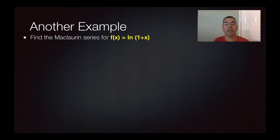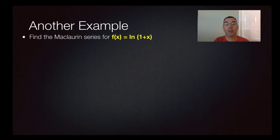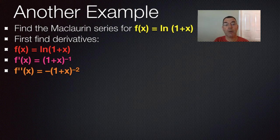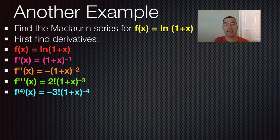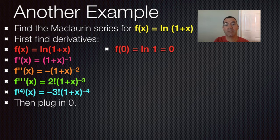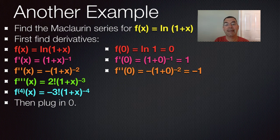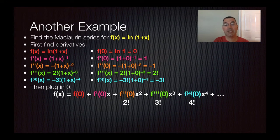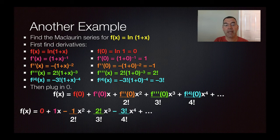Let's do another example — this time approximating the natural log of one plus x. First we'll find some derivatives. The first derivative is (1+x) to the negative one. The next derivative is negative (1+x) to the negative two. Then positive 2 factorial times (1+x) to the negative three. Then negative 3 factorial times (1+x) to the negative four, and so on. Plugging in zero, we get zero for the function, one for the first derivative, negative one for the second derivative, 2 factorial for the third, and negative 3 factorial for the fourth. Taking the general Maclaurin formula and substituting those values gives us f(x) equals zero plus x and so on.